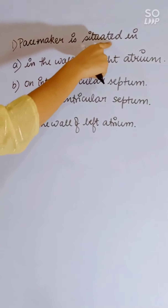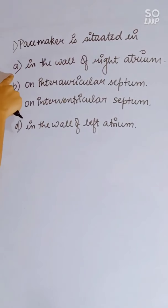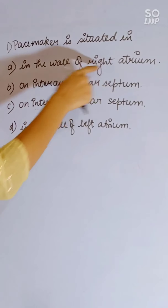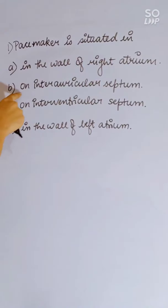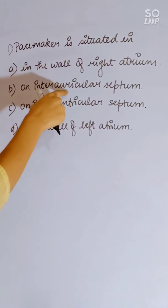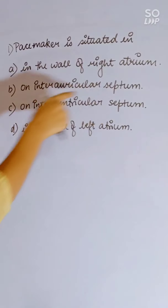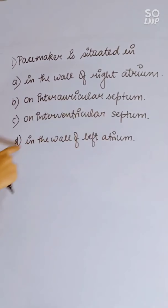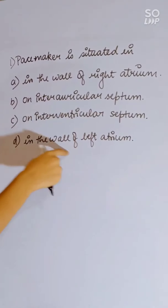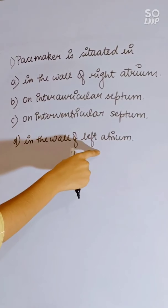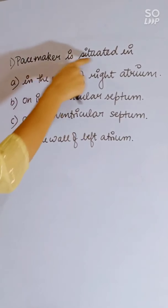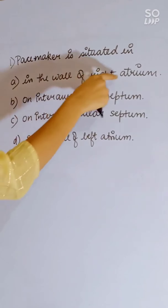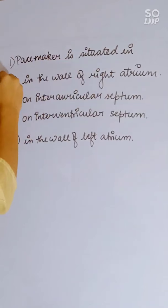The pacemaker is situated in: the wall of the right atrium, on the inter-auricular septum, on the inter-ventricular septum, or in the wall of the left atrium. The pacemaker is situated in the wall of the right atrium. Correct answer is A.